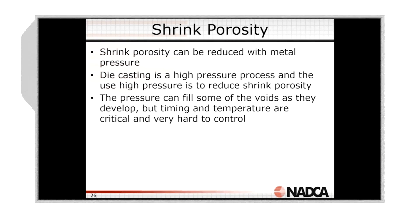We fill the cold chamber, we go through pour hole close, slow shot, fast shot, then we go into our intensification phase. As we enter into our intensification phase, prior to the gates becoming solid, we're filling those voids. Those voids start to develop as shrink occurs, and we're then increasing the pressure of the metal to fill past those thin areas and feed that shrink.